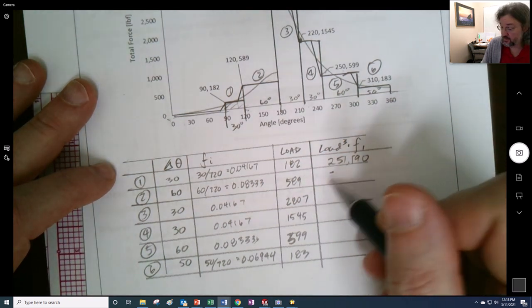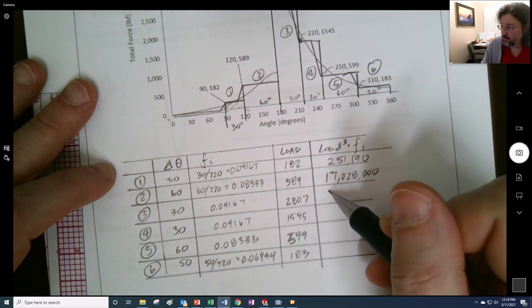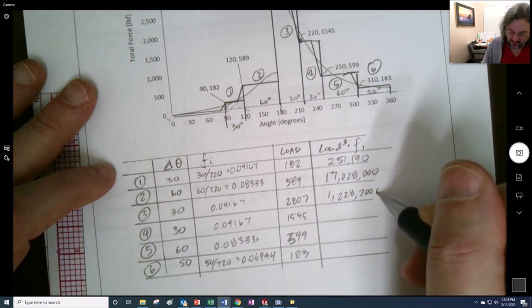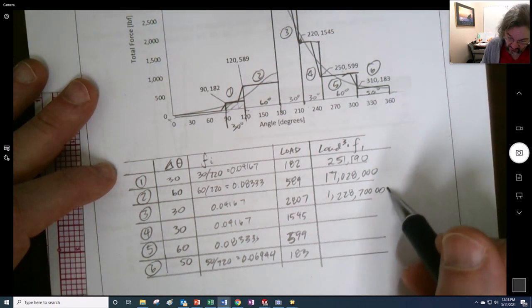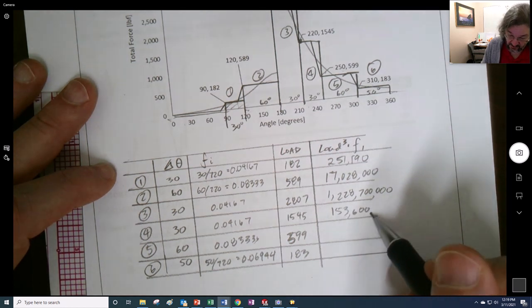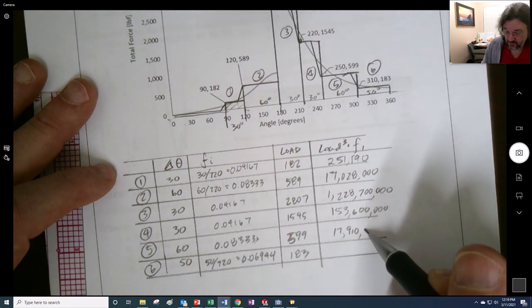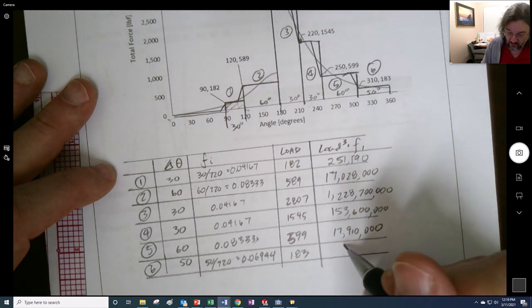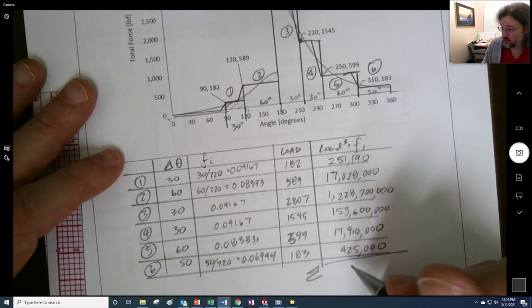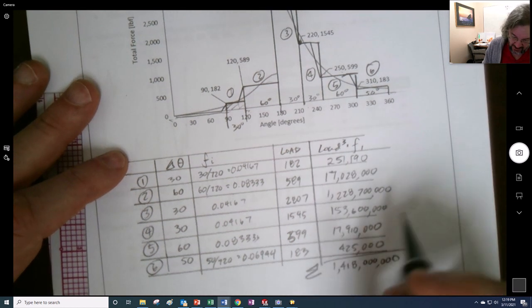190, this is, let's see, you got 17,028, there you go. 1,228,700,000 I think. That's a lot. 153,600,000. 17,000,000. And then 425,000. So some of them don't even matter all that much. So we take the summation of all of those, and I get 1,418,000,000 blah, blah, blah.